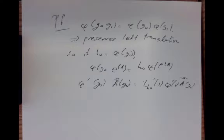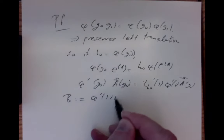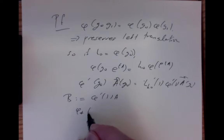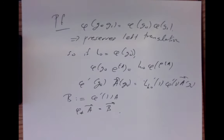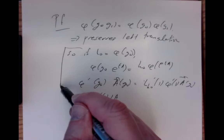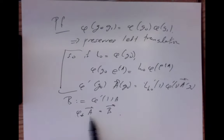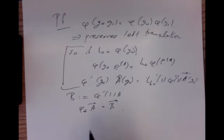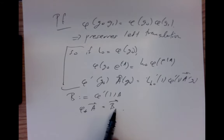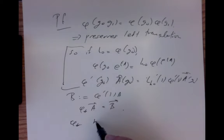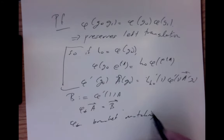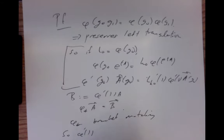If we let B be phi-prime of the identity applied to A, then phi star of vector-field A is vector-field B — the vector fields are matched up. So it matches left-invariant vector fields to left-invariant vector fields. Intuitively it's obvious: if it preserves left translations, and left translation is how we defined the left-invariant vector fields, it must take left-invariant vector fields to left-invariant vector fields. Therefore left-invariant vector field brackets must be matched up, and phi-prime at 1 is a Lie algebra morphism matching up the brackets.